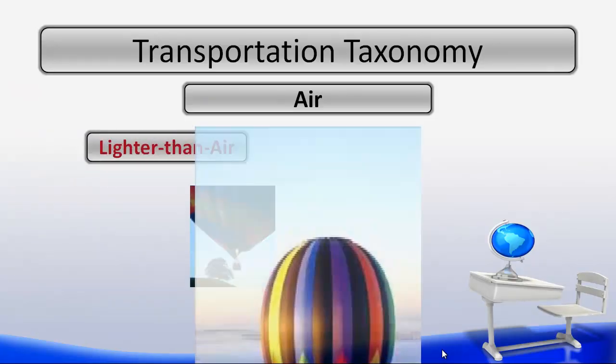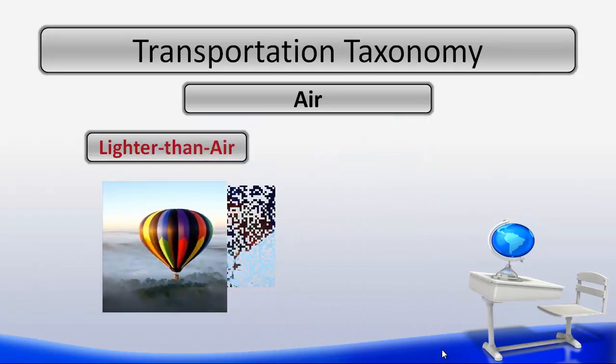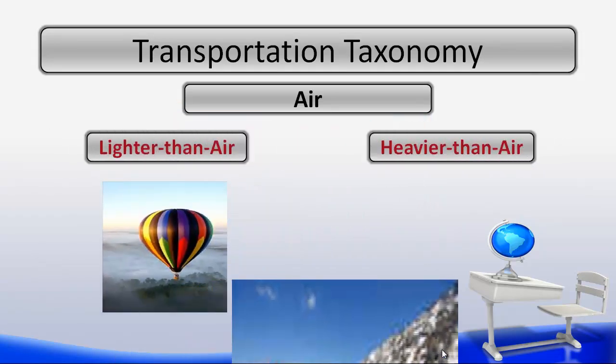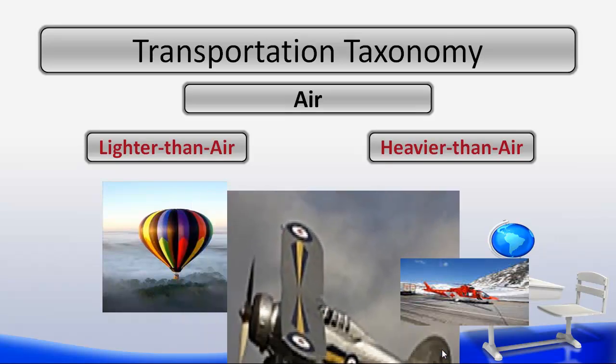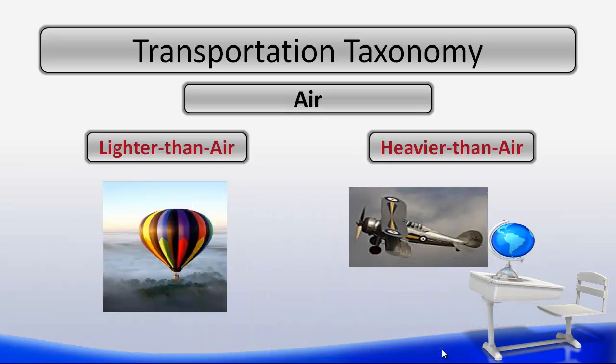Examples of air transportation based on the lighter-than-air subsystem would include hot air balloons. Some examples of heavier-than-air transportation would include planes, helicopters, gliders, and a few more.